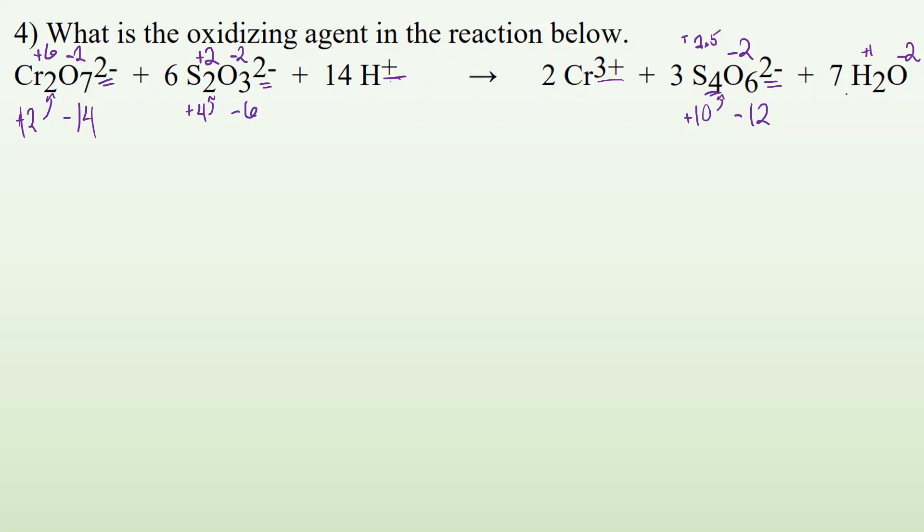So what is the oxidizing agent below? What gets reduced? Well, let's see. Cr2O7 goes from a plus six down to a plus three. So that is what's getting reduced, which means it is causing oxidation. How is this able to get reduced? Well, it's gaining electrons. It's forcing something to lose its electrons. It's causing oxidation.